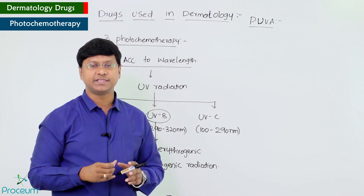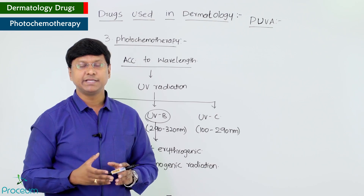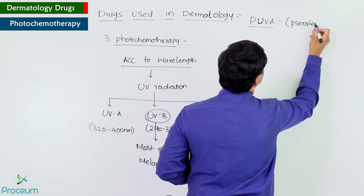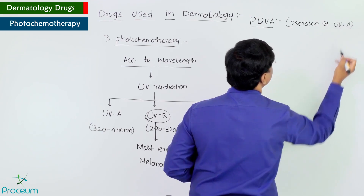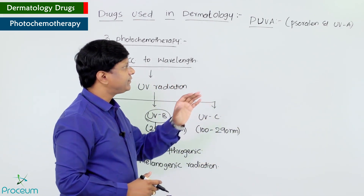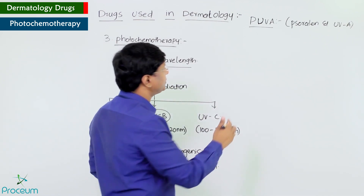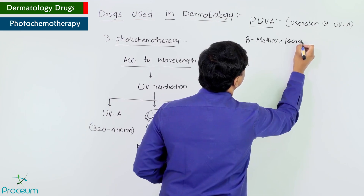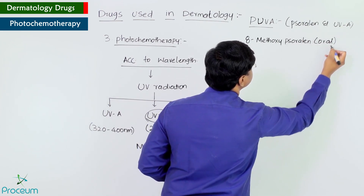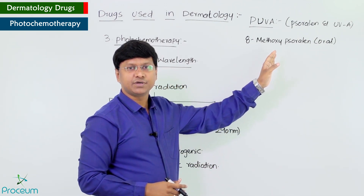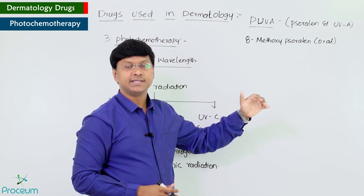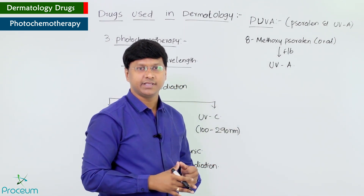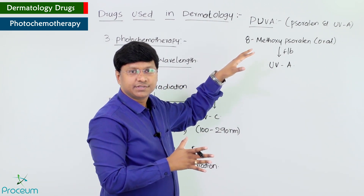Next we have PUVA therapy for psoriasis. PUVA stands for psoralen and ultraviolet A. The type of psoralen used is 8-methoxy psoralen, which is an oral formulation. This 8-methoxy psoralen should be followed by ultraviolet A exposure.